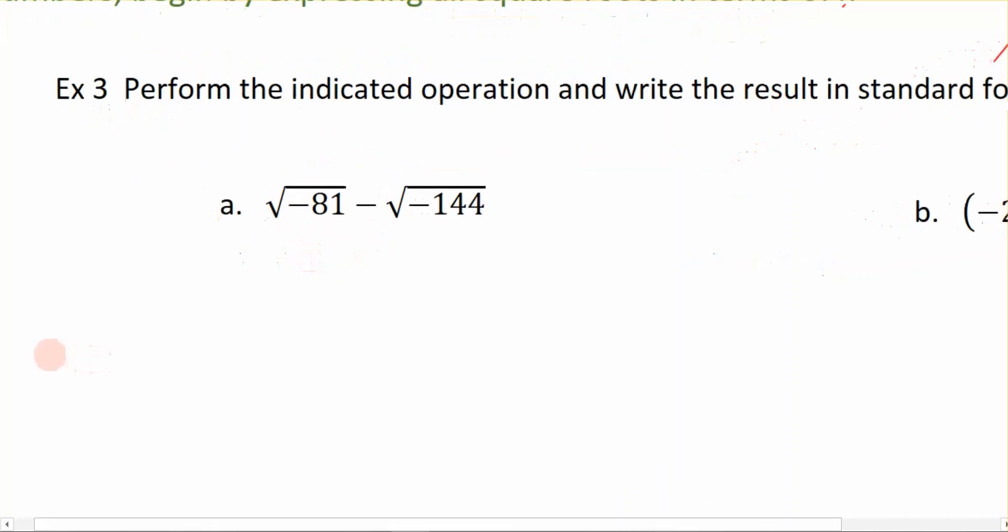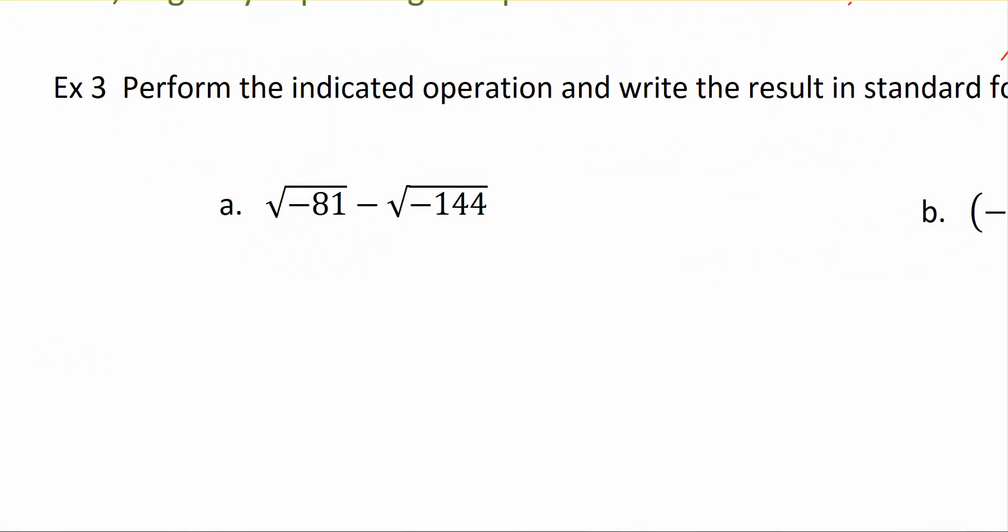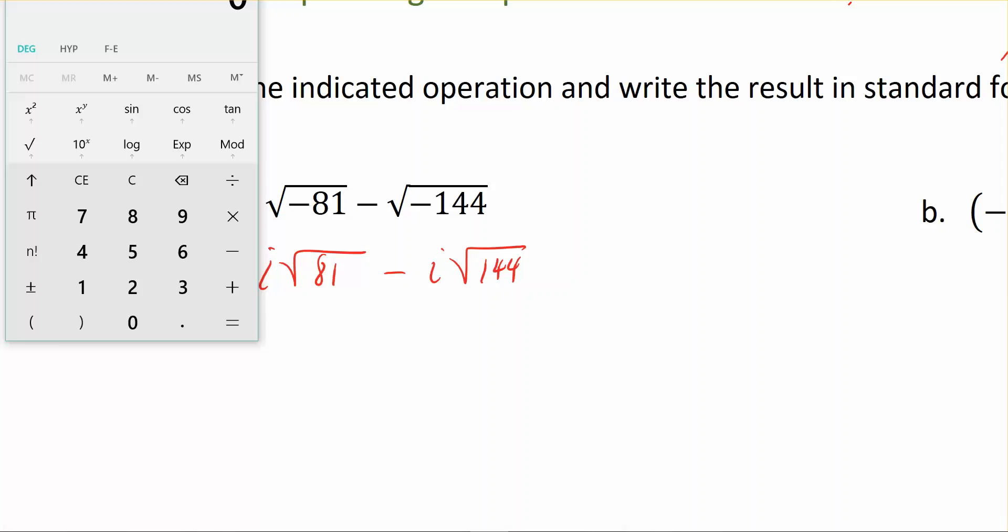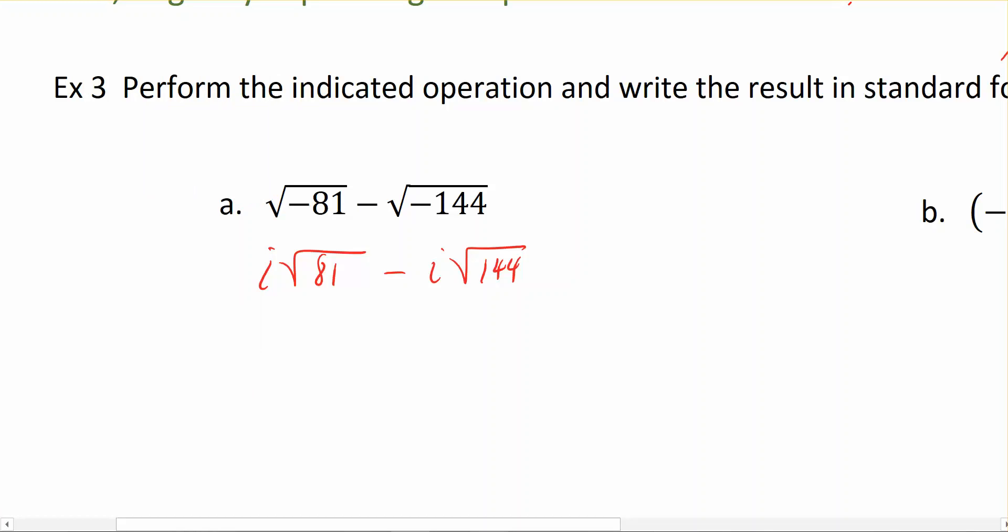We have this problem right here: the square root of negative 81 minus the square root of negative 144. Because we want to start by expressing each of these terms in terms of i, we take that negative out and write it as i times the square root of 81 minus i times the square root of 144. So that's just expressing each of these square root symbols in terms of i.